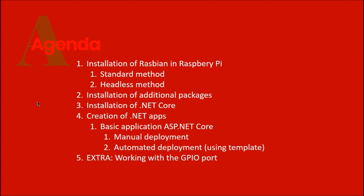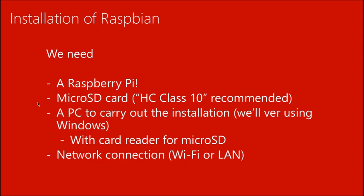I've added an extra point about working with the GPIO — the General Purpose Input/Output — that every Raspberry Pi has. We'll see that at the very end of the webinar. The device needs a minimum speed on the SD card in order to perform well.